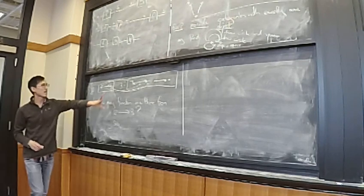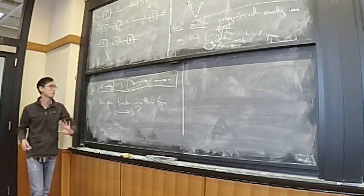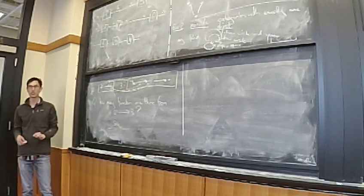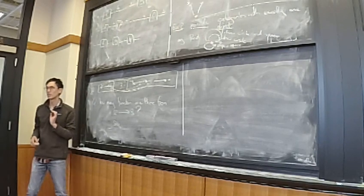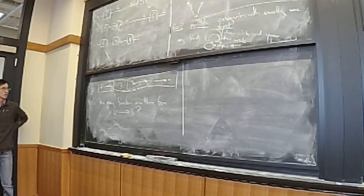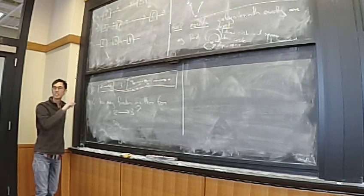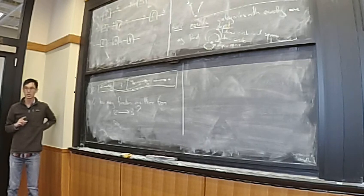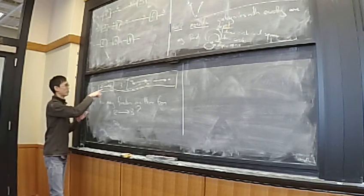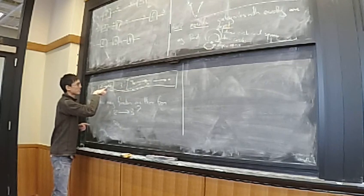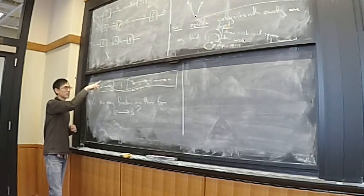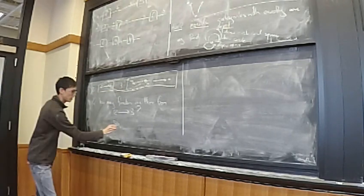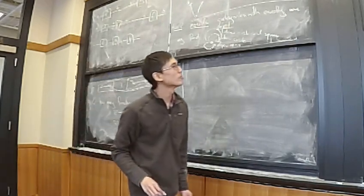So if we map the morphism in two to the identity morphism on, say, this object in three, then all three morphisms — including the identity — all go to that identity morphism, and both objects go to that same object. There are two objects and they both map to that object.